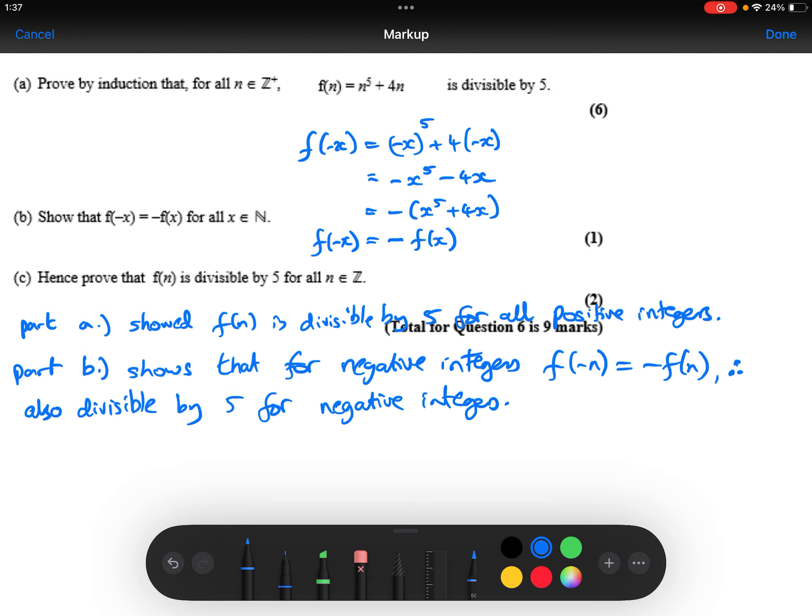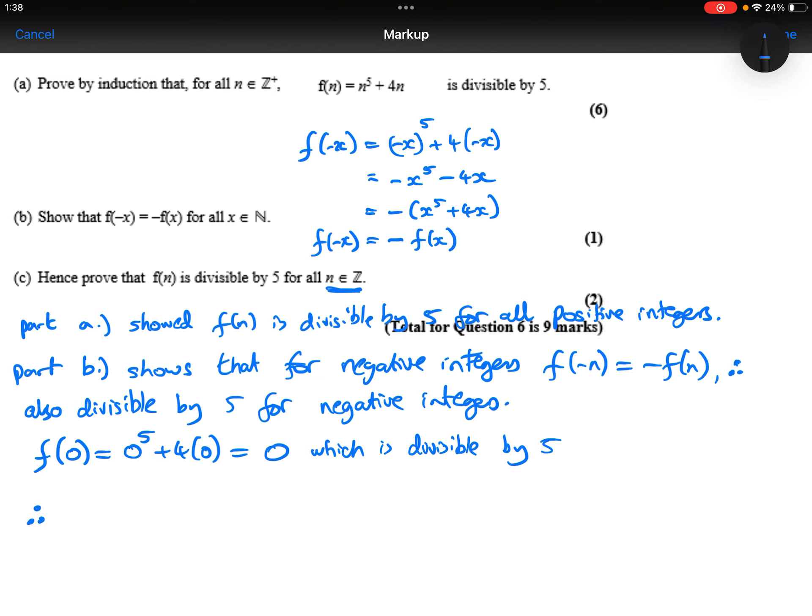So, we've shown it's definitely true for all positive integers, and we've also shown that that means, then, that it's also going to be true for negative integers. The only other integer we've not talked about yet is 0. So, we need to show that it's true for 0. And I think just substituting 0 into our function, 0 to the power of 5 plus 4 times 0 is 0, which is divisible by 5. Therefore, divisible by 5 for all integers, positive, negative, and 0.